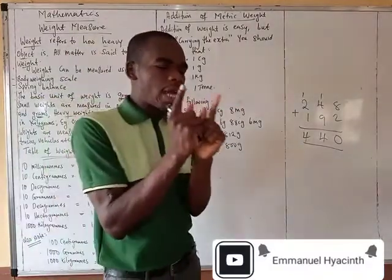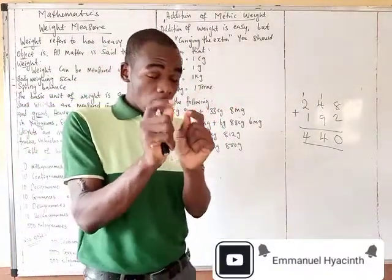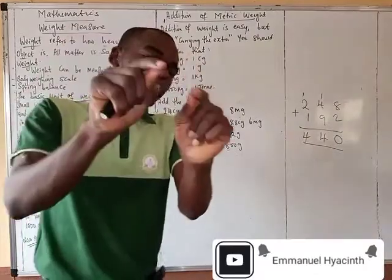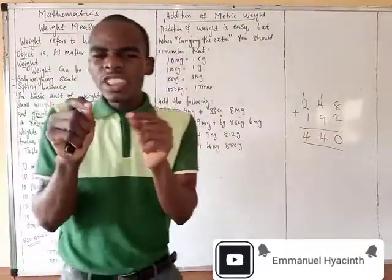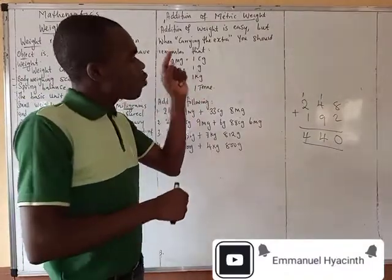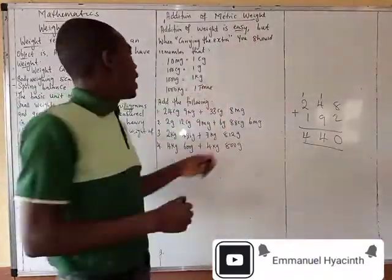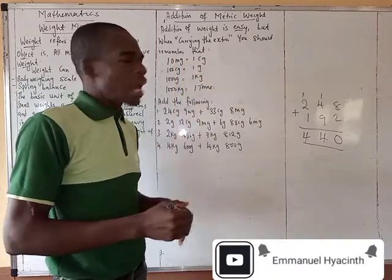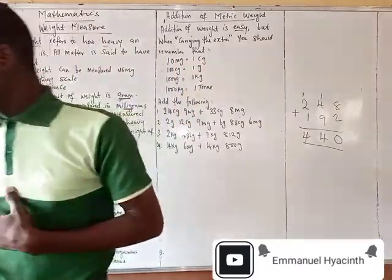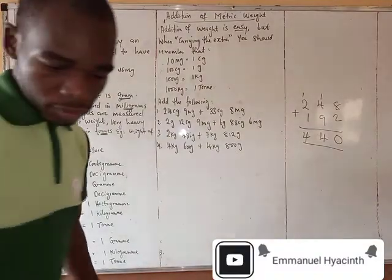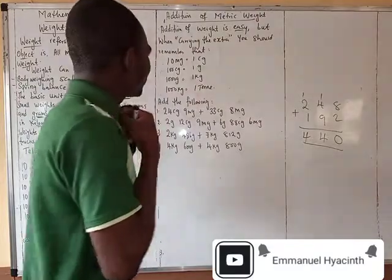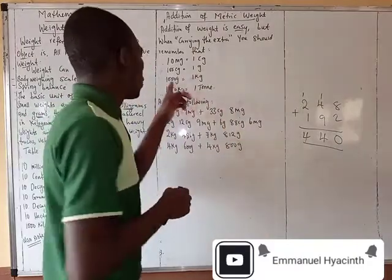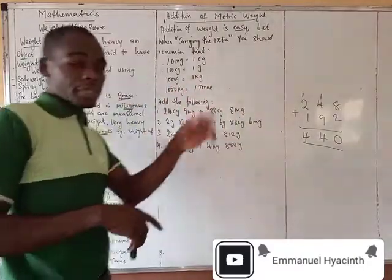But there is a little difference. Stay with me — there is a little difference, and that little difference is what we want to bring to your attention today. That little difference means addition of weight is easy, but when carrying the extra, you should remember that 10 milligrams will give you 1 centigram — as we said in our previous class. You should remember: 10 milligrams gives you 1 centigram, 100 centigrams gives you 1 gram, 1000 grams gives you 1 kilogram, and 1000 kilograms gives you 1 ton.